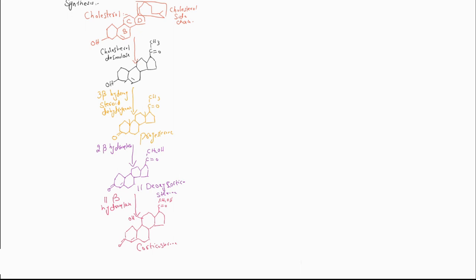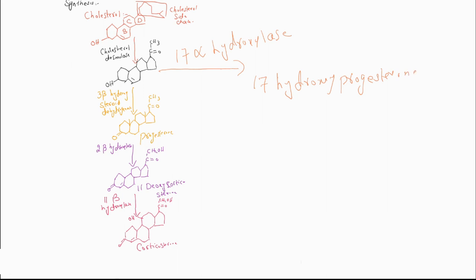Now for the synthesis of cortisol, pregnenolone is processed by the enzyme 17-alpha-hydroxylase, which causes the conversion of progesterone into 17-hydroxy-progesterone. 17-hydroxy-progesterone is further processed by different enzymes and the final product is cortisol.